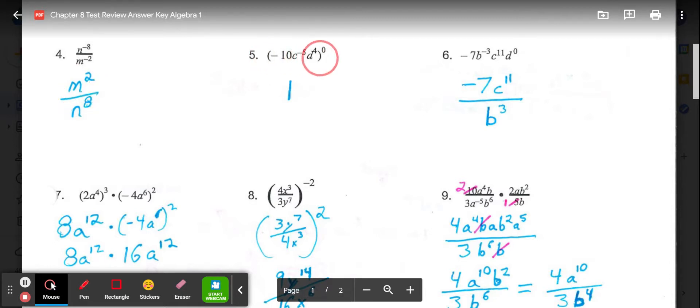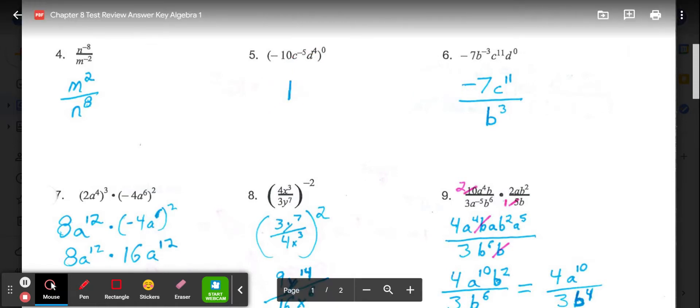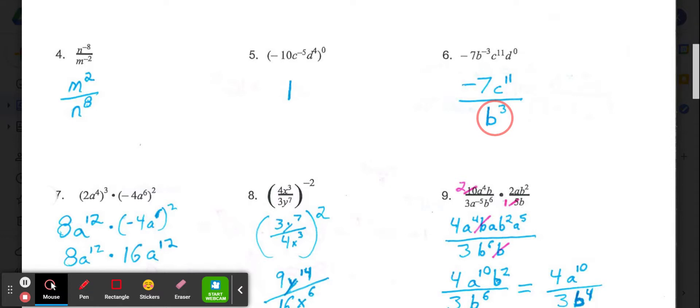Number 5, the whole thing is in parentheses to the 0 power. Anything to the 0 power gives us an answer of 1. In 6, right away I notice d to the 0 power, which would be 1, so I'm not even going to worry about that. What I have then is negative 7 times b to the negative 3rd times c to the 11th. The b to the negative 3rd needs to move to the bottom and become b to the 3rd, and our numerator on top would be negative 7c to the 11th.